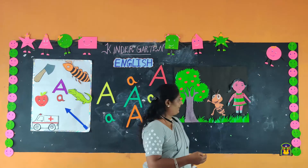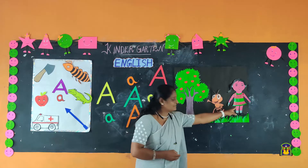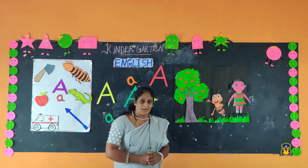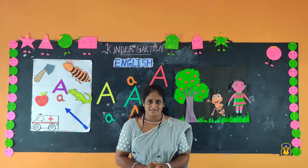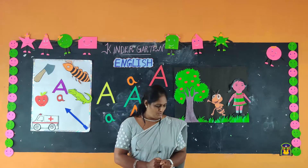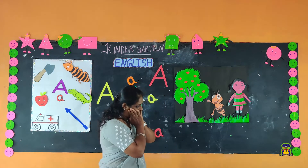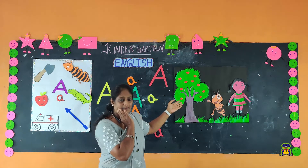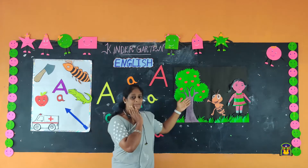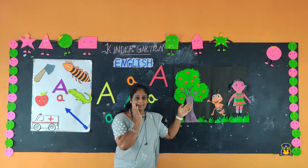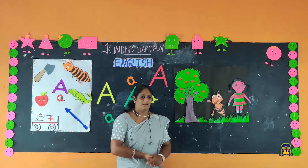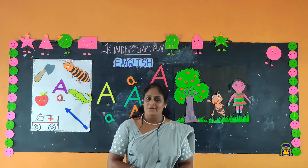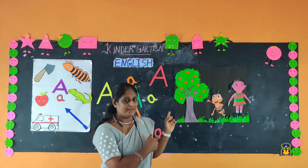One day, Alice and Annie the ant went to the park for playing. Wow! There is an apple tree! See? There is an apple tree. Alice, shall we go and play near the apple tree?